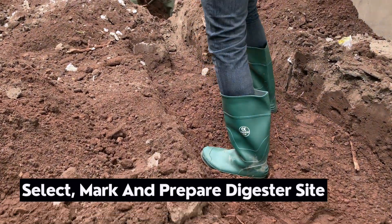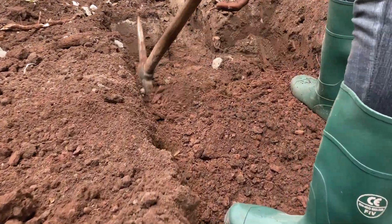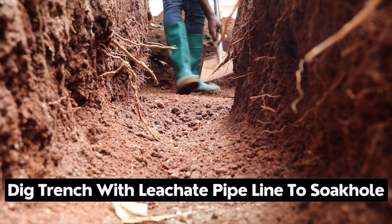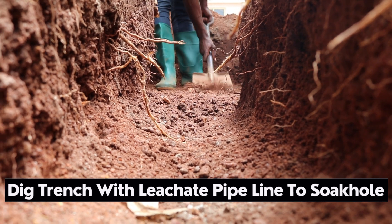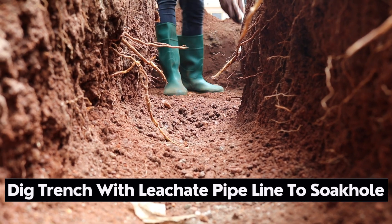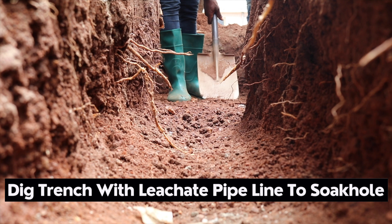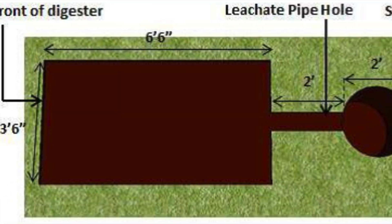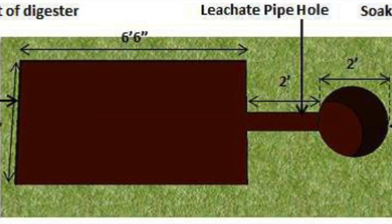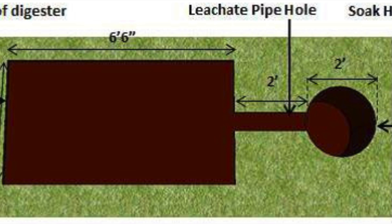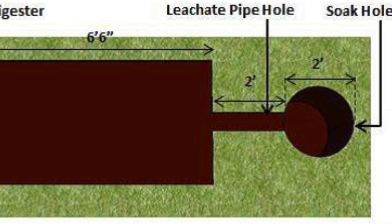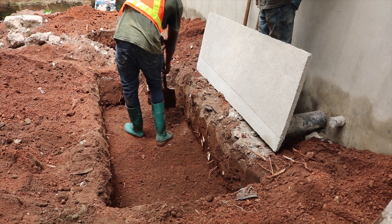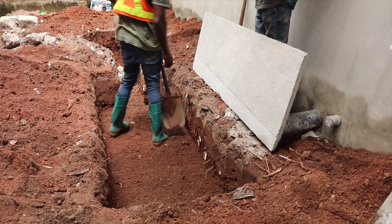The digester should ideally be sited at a well-drained area. From your site marking and digging, the shape or diagram you are trying to achieve is a rectangular shape for the digester and then a circular shape for the so-called pit.